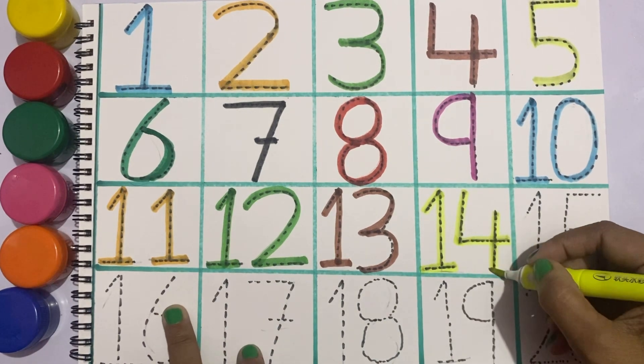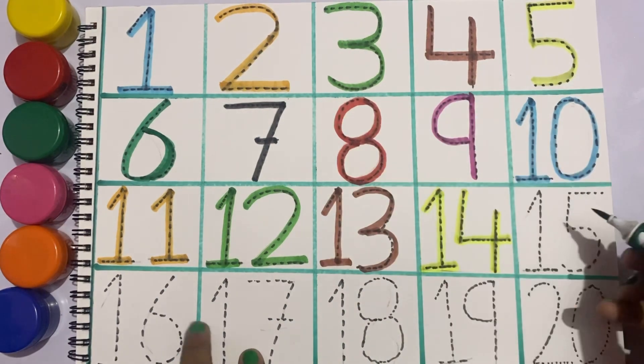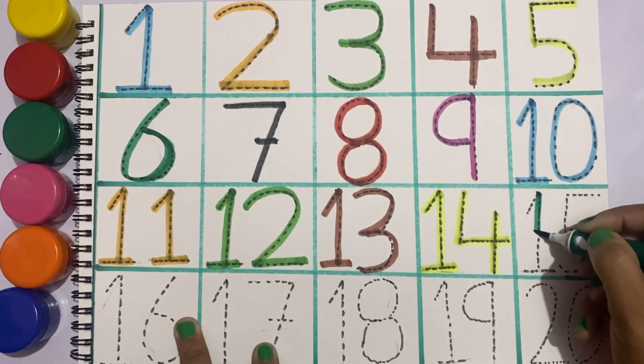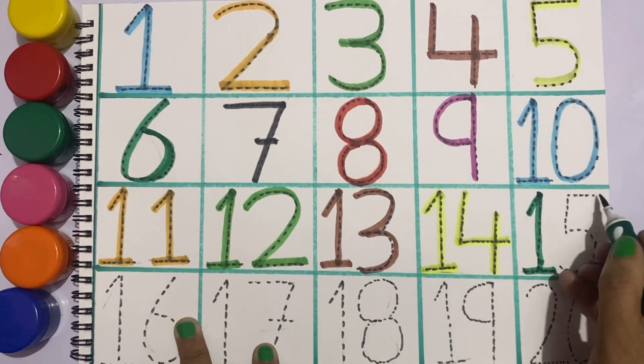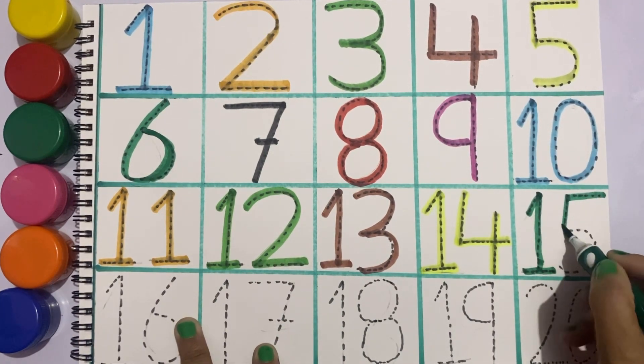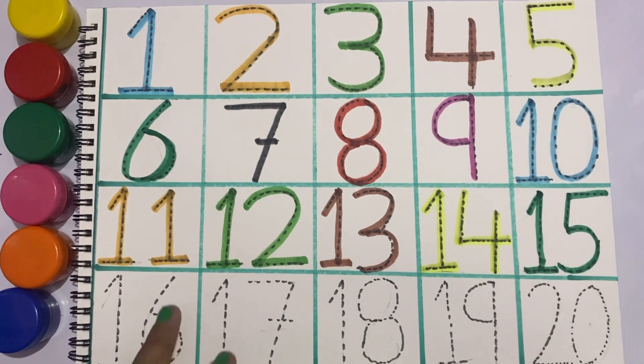One four, fourteen. Green color, one five, fifteen. One five, fifteen.